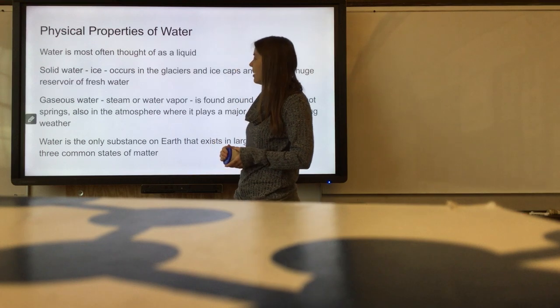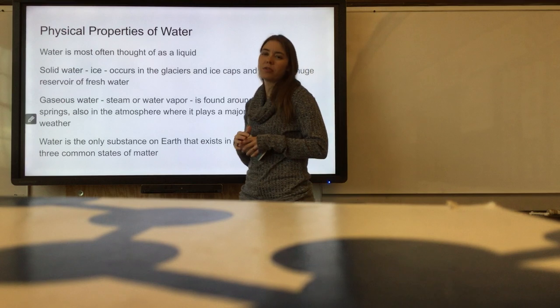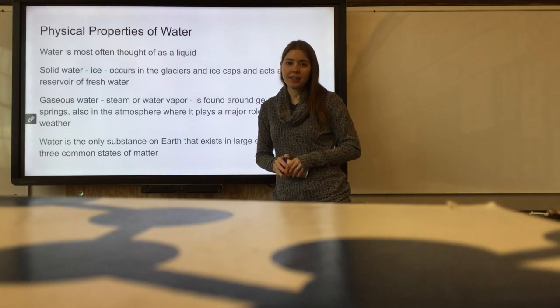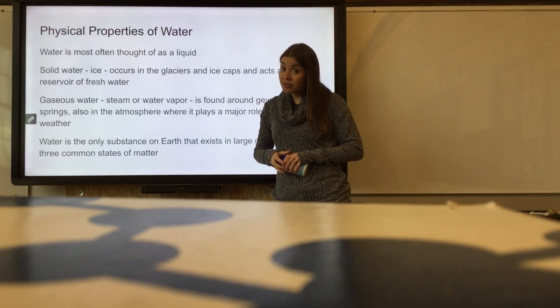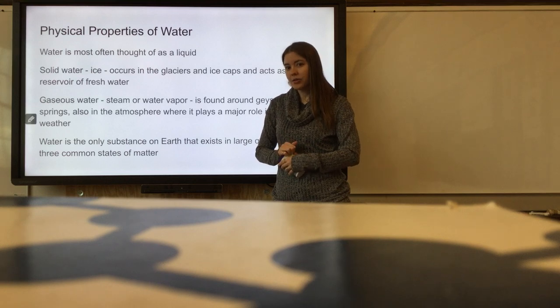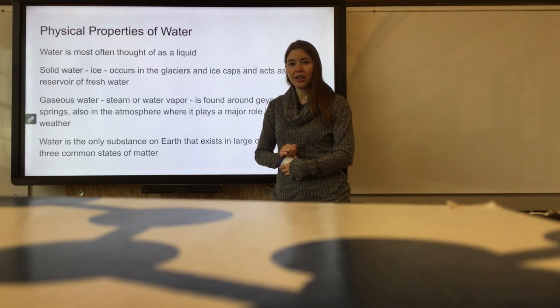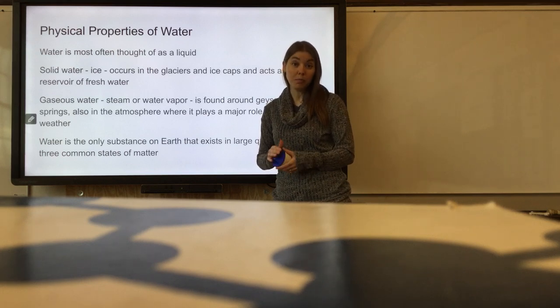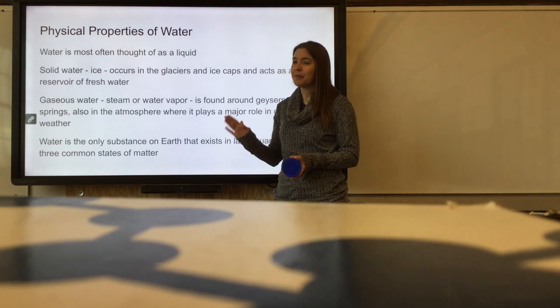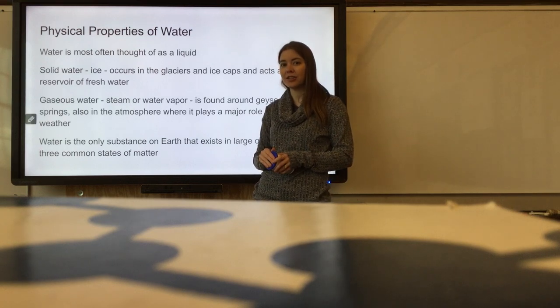Solid water, ice, occurs in the glaciers and ice caps. It's a huge reservoir of fresh water. One of the problems right now with the ice caps melting is that we are losing a ton of fresh water. As those glaciers melt, we actually change the salinity of the oceans, which can be bad for the critters that live there. Most of the fresh water on the planet is in the glaciers and ice caps, frozen in ice.